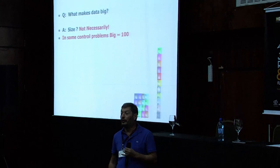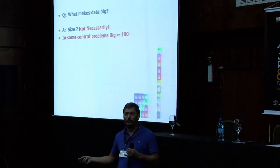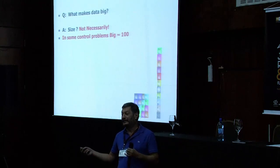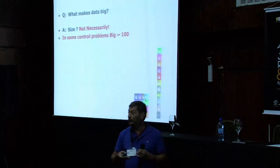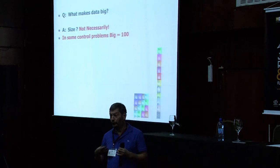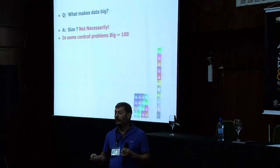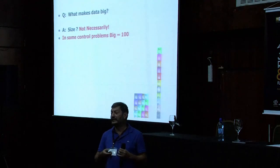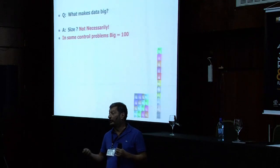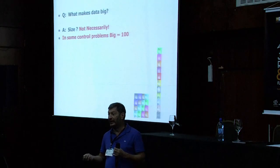Turns out that in some control problems, I'm going to argue that big data is about 100. Now, you talk to your machine learning friend and you tell her: for me, big data is 100, maybe 200. She will laugh you out of the room. So we actually need to explain why, for control, big data is about 100 or 200. There's a very good reason for that, and once we understand why problems with maybe 200 or 300 parameters are challenging, maybe we can do something about it.